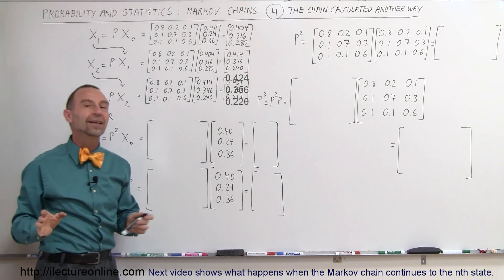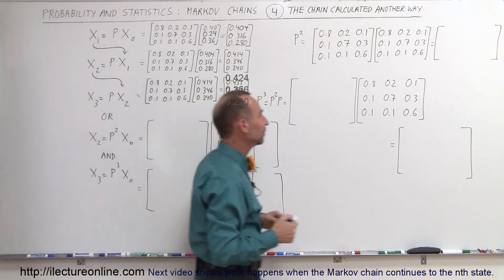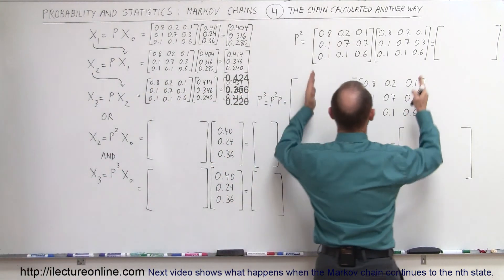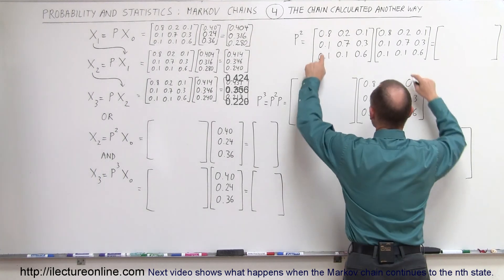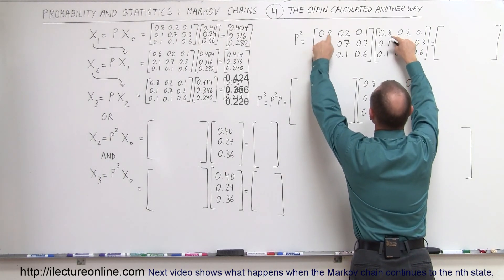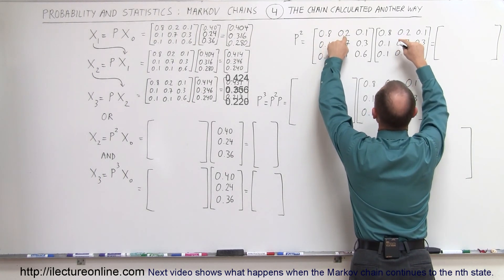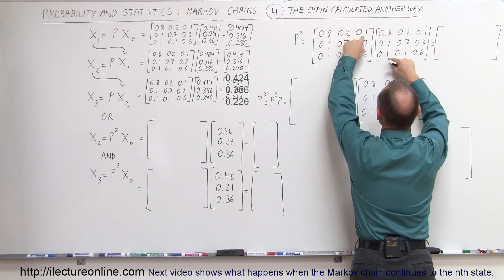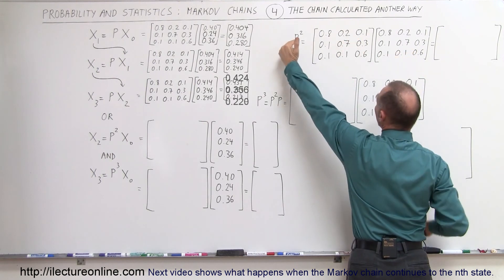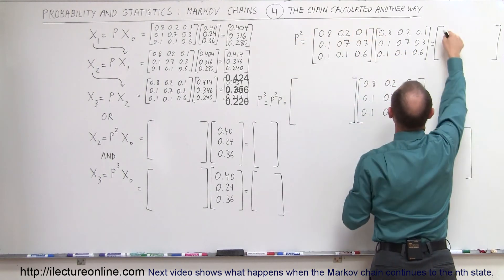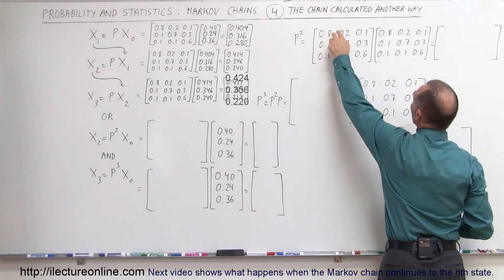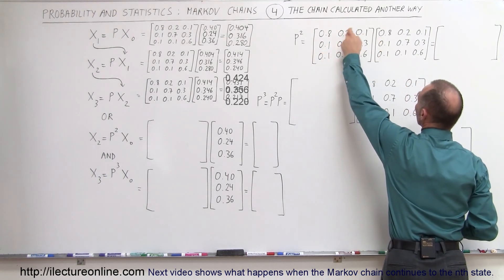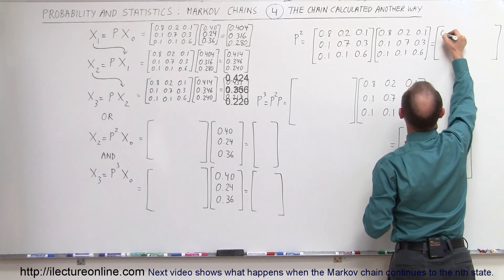So first we have to multiply the probability matrix with itself. We take 0.8 times 0.8 plus 0.2 times 0.1 plus 0.1 times 0.1 — multiplying those row elements times those column elements — to get this first element, which gives us 0.67.